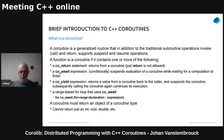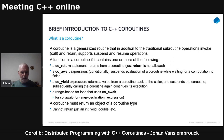Co_await is a conditionally suspensive evaluation while waiting for a computation to finish. If that computation is already finished, you will resume; otherwise you will suspend your coroutine. Co_yield is used in combination with generators — you have a range-based for loop that uses co_yield. If you have a function that has co_return, co_await, or co_yield, you also need a special return type; you can't just return an int or void. That's a coroutine type you have to develop yourself.